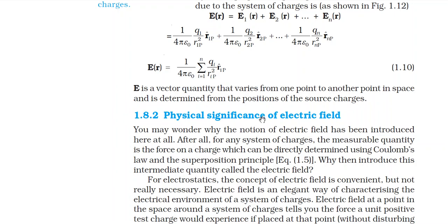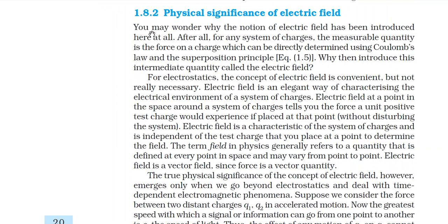The next topic is the physical significance of electric field. The physical significance means — electric field is not visible, so we can see the two charges and the force with acceleration: the body will accelerate and the motion will be accelerated, so that can be physically observed. But the electric field itself is not visible. So, you may wonder why the notion of electric field has been introduced here at all.